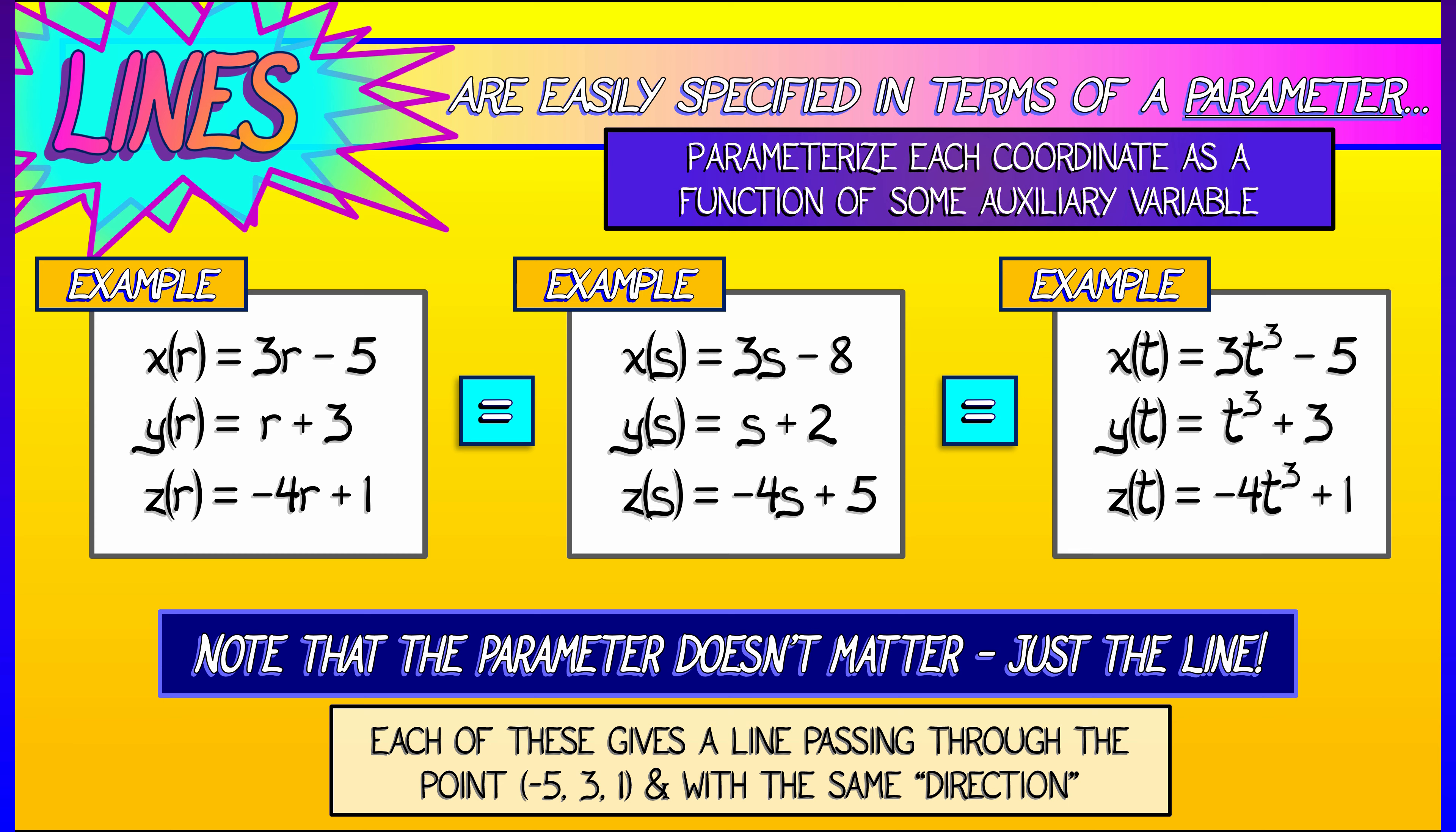Now, you can really see this if you think about what happens when you plug in r equals 0. You get that point, negative 5, 3, 1. And if I substitute s equals r plus 1, I get the second parameterization, as you can check with a little algebra. And lastly, if I substitute in t cubed equals r, I can see that the first and the third parameterizations are really giving me the exact same line. So that's what a parameterization of a line in 3D looks like. It takes a little bit of practice getting used to, but you can do it.